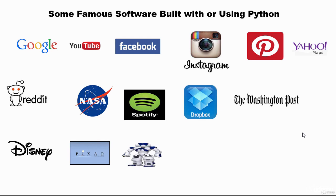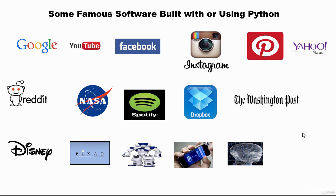Python can be used to control robots, and is also used in speech recognition and face recognition. The Washington Post uses Python. Disney and Pixar use Python in some of their animation. SurveyMonkey, the biggest survey website in the world, uses Python. These are some famous companies either built using Python or using parts of Python in running their software.